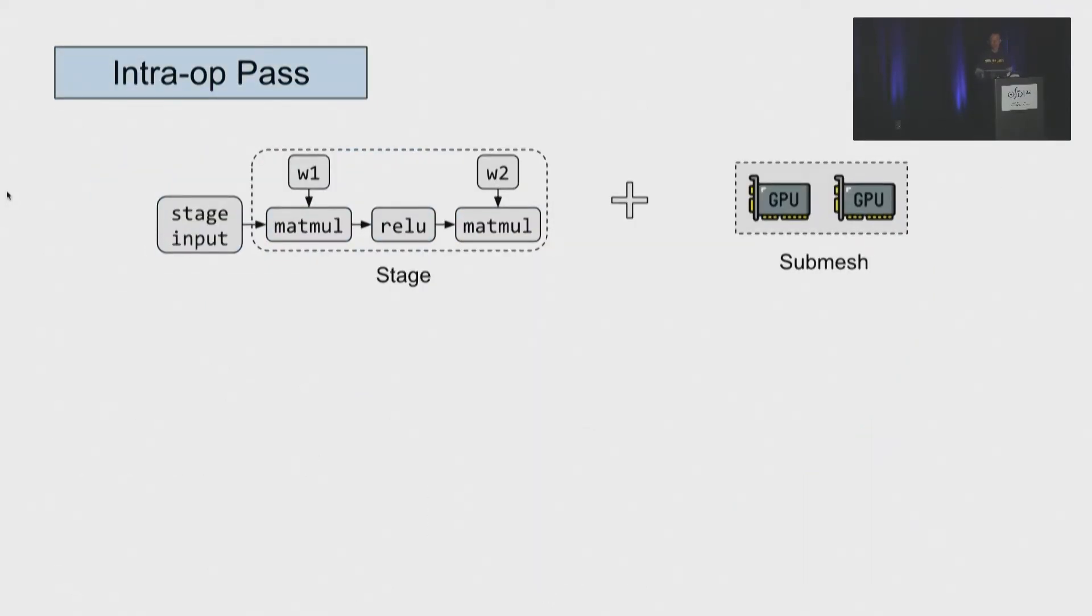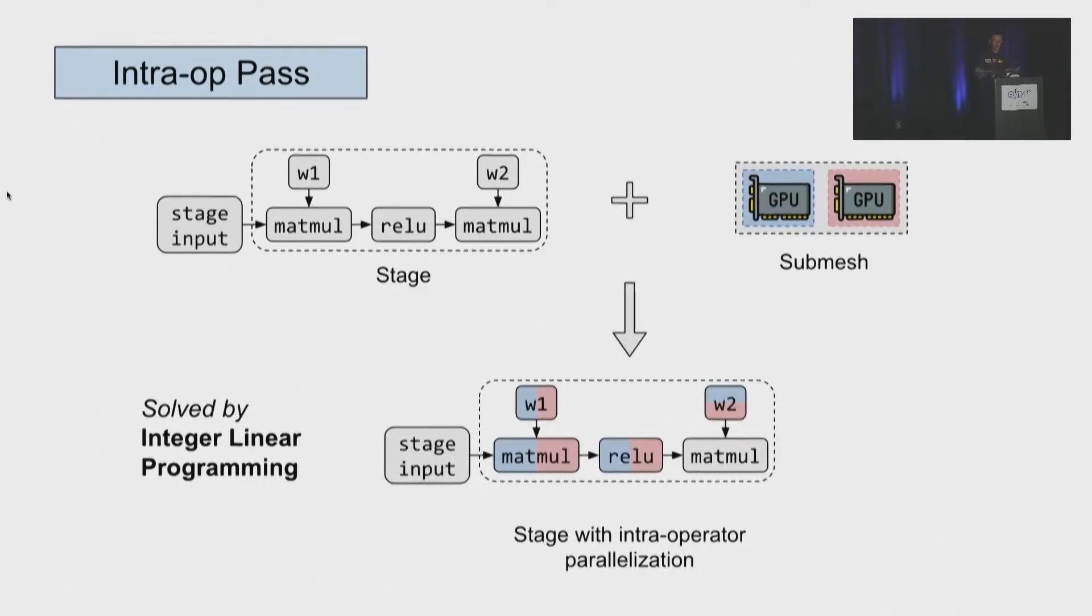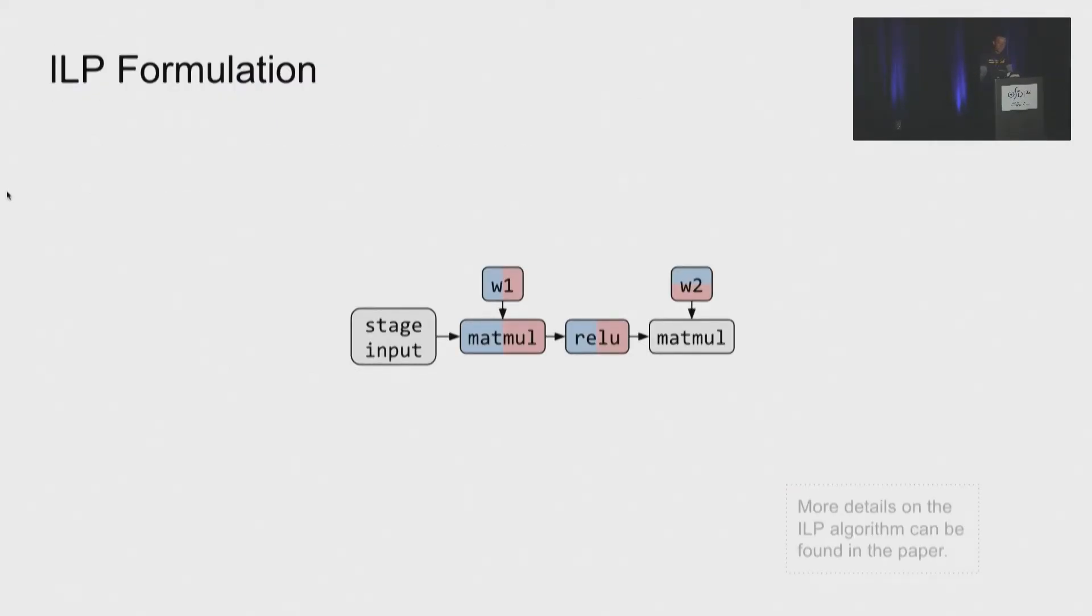So let's now focus on the intra-operator pass. For a single stage and a submesh of devices from the inter-operator pass, the goal here is to parallelize the stage on the devices in the submesh with the best intra-operator parallel strategy possible. So in Alpa, we find that this problem can be formulated as an integer linear programming problem. Specifically, the choice of different parallel strategies for each operator in the computation graph can be formulated as a decision vector in the ILP. And the optimal parallel strategy can minimize the ILP objective, which is the sum of the computation cost of each parallelized operator and the communication cost within and between different operators. Again, more details can be found in our paper.